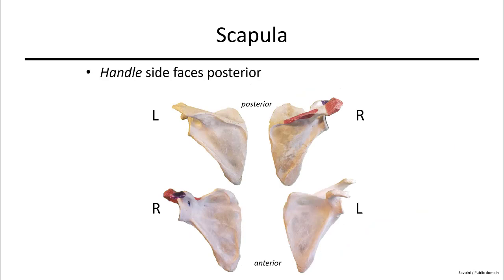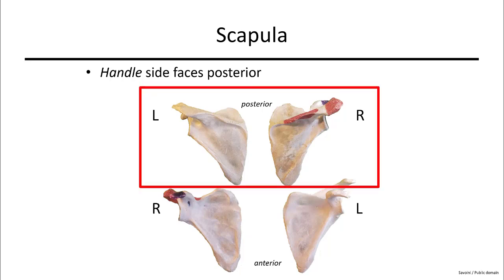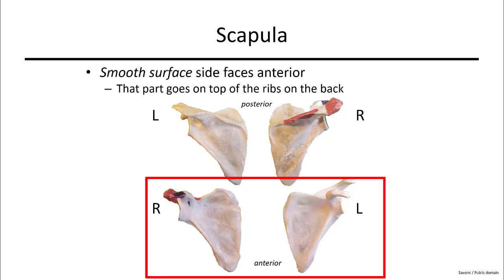For the scapula, to orient yourself if you have a scapula in hand, grab the part that looks like a handle — that will face posterior — whereas the smooth surface is going to face against the body, resting against the ribs. From the posterior view, the handle faces posteriorly where the socket faces laterally. The anterior view shows a smooth surface that rests against the torso.